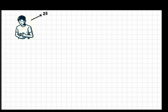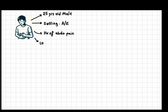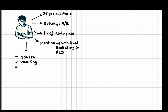Let's begin with a case. In this case, a 25-year-old male presents to the emergency department with a 24-hour history of abdominal pain. The pain initially started around the umbilical area and later migrated to the right lower quadrant. He also reports associated symptoms such as nausea, a few episodes of vomiting, and loss of appetite.